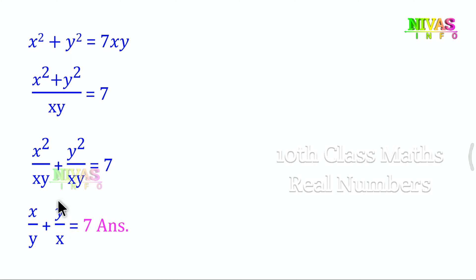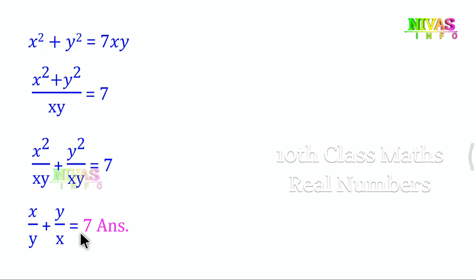So this is our answer. The value of x by y plus y by x is 7. Now, if you are confused about 1 by 2 plus 2 by 3: 1 by 2 is the value of x by y, and 2 by 3 is the value of y by x. So the answer is 7.